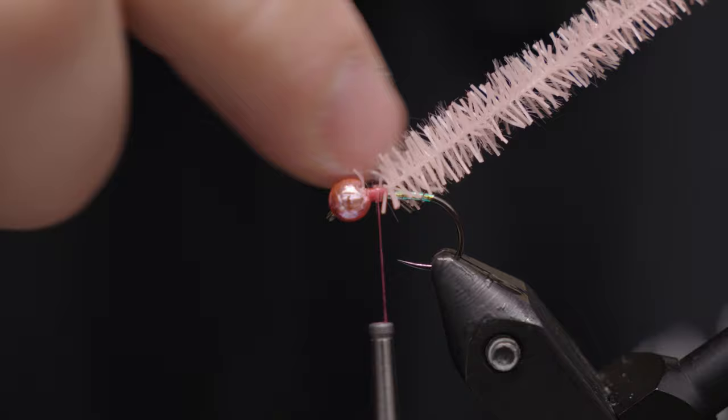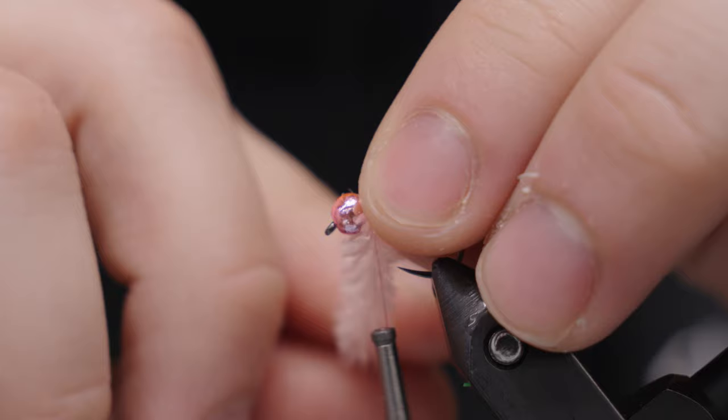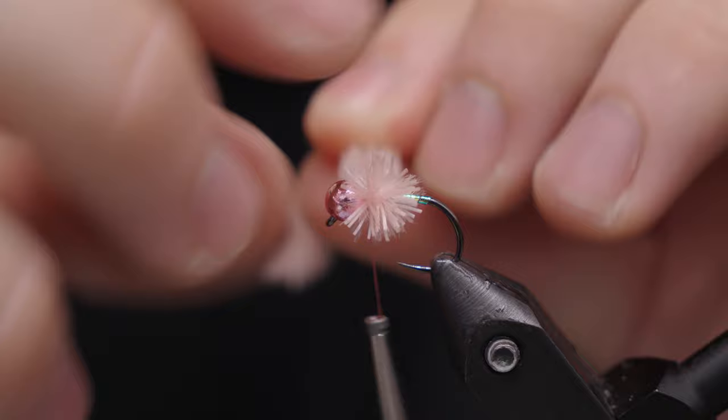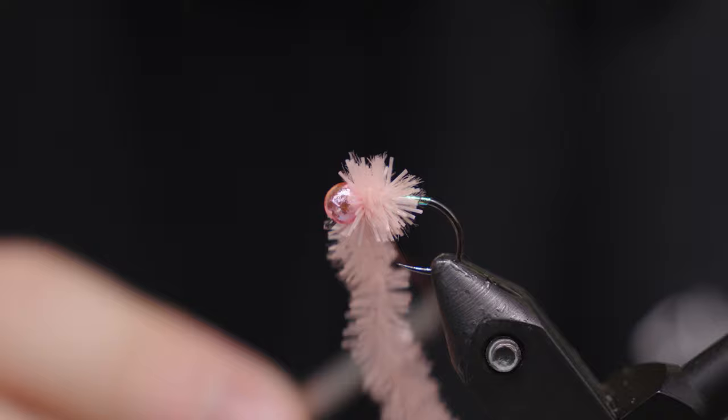You're just going to polymer through there. Done. So about three wraps. One. And with each wrap, you're going to want to pull these extra fibers back. Two. And get that bead locked all the way forward. Three. And that's how you tie the Purdy Egg.